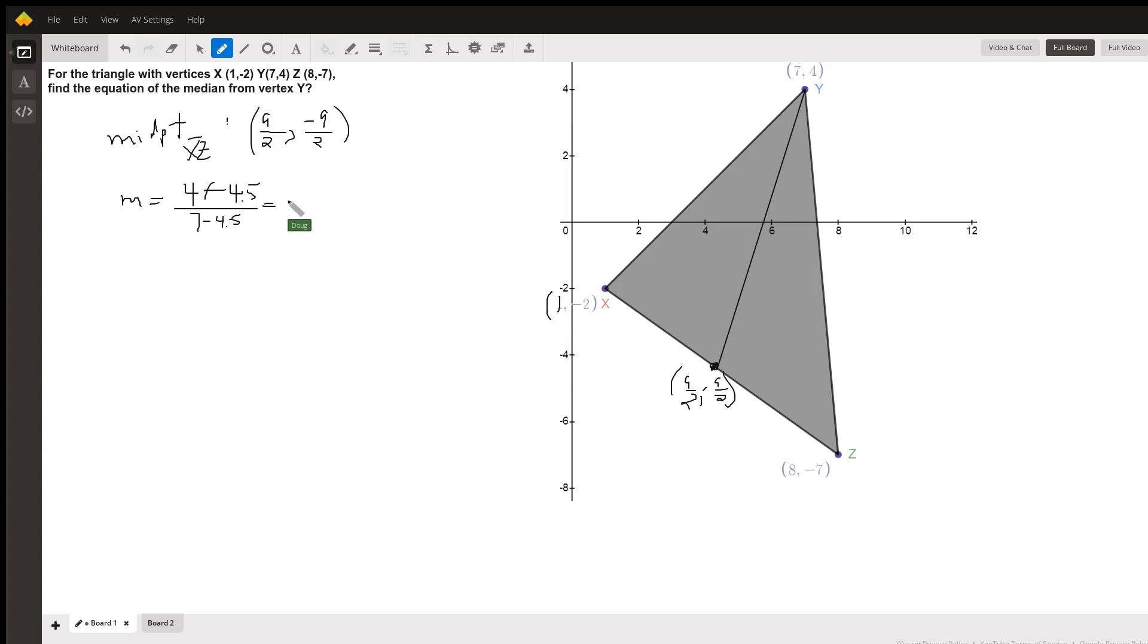So that looks like 8 and a half, or, oh, I'll just write 8.5 divided by 2.5. And 8.5 divided by 2.5 is 3.4. I did that with a calculator. Or 3 and 2 fifths.